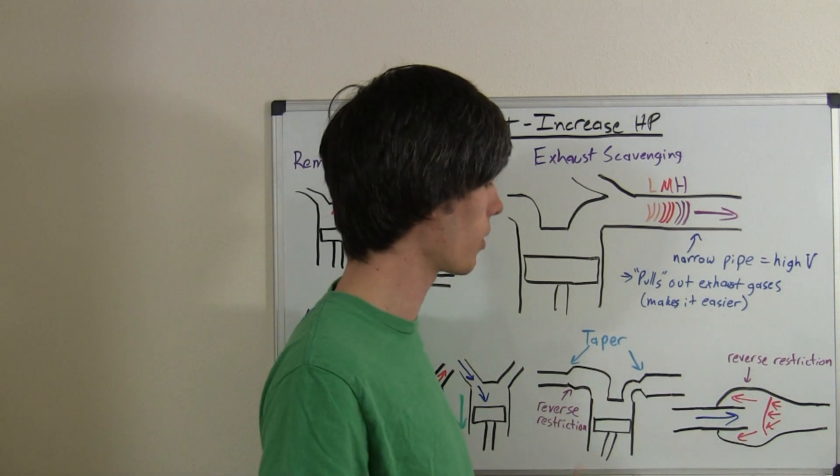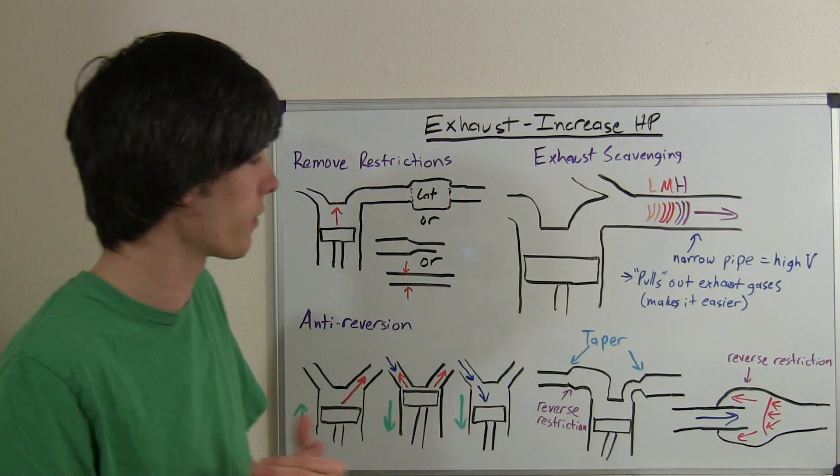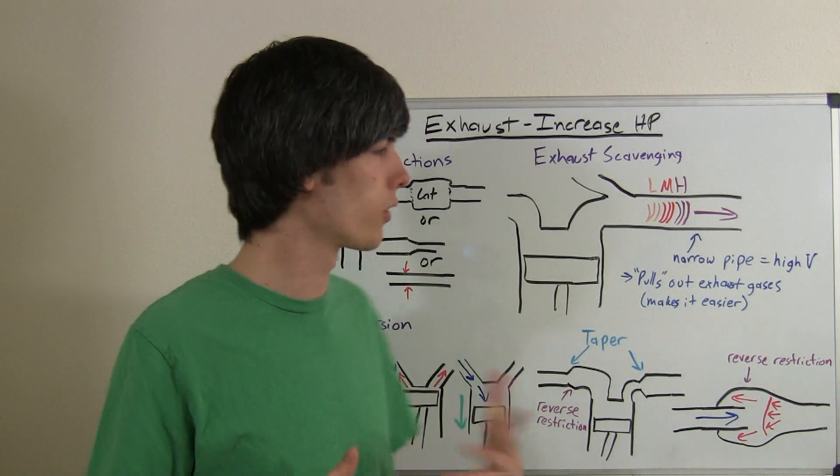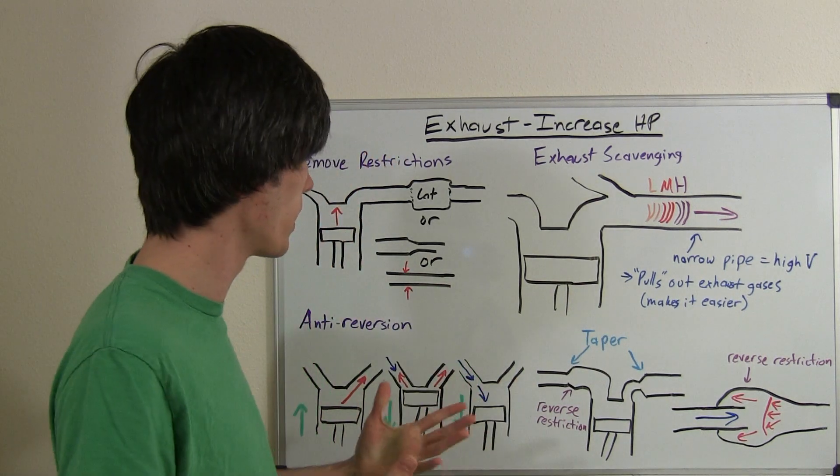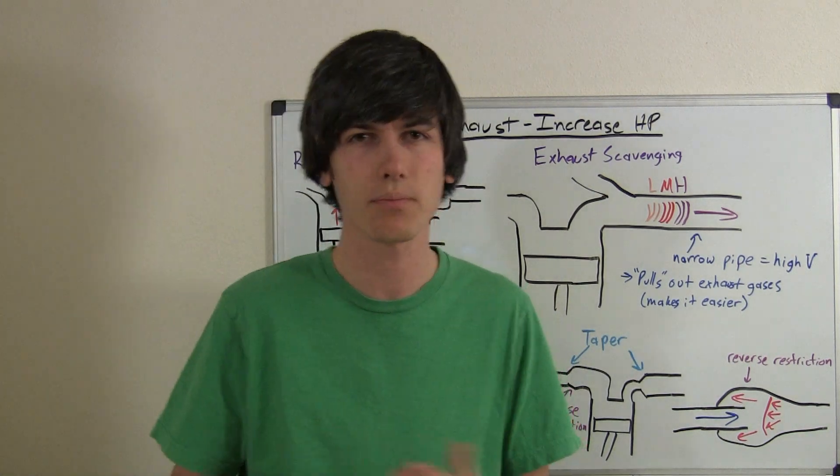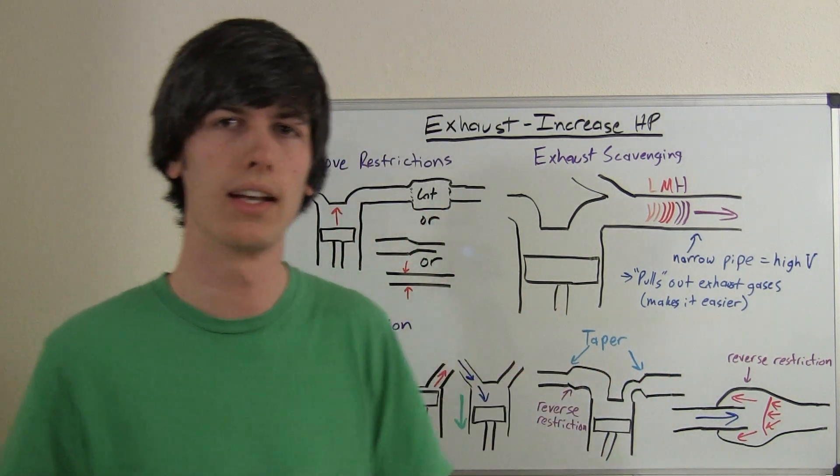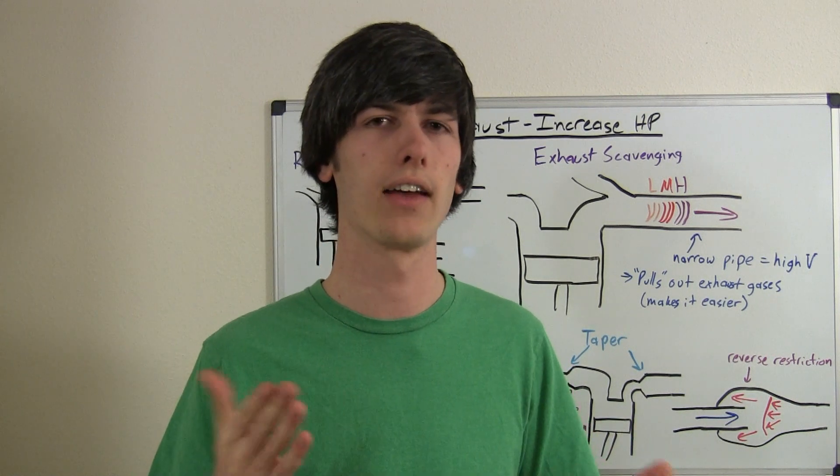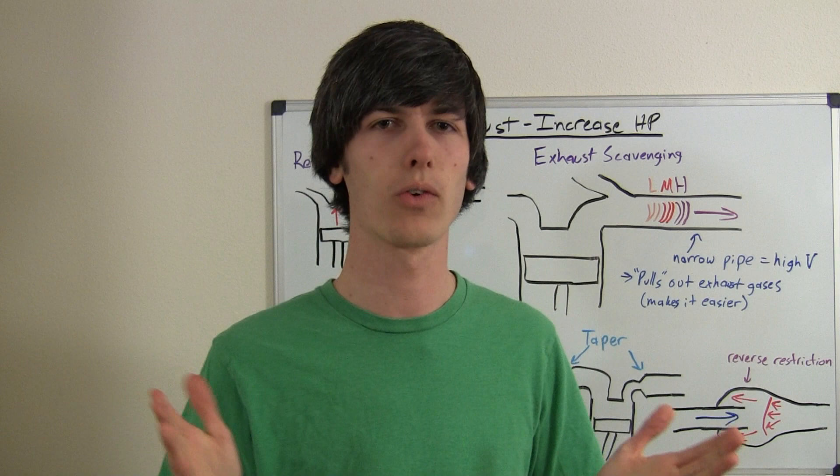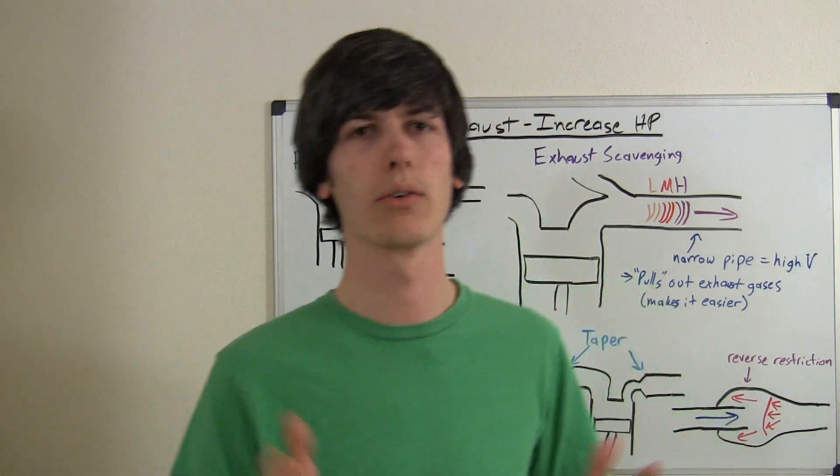So there's things like anti-reversion headers, and piping and stuff like that, that you can buy, so that that doesn't happen, and that can give you an increase in horsepower if you're having a reversion problem. So those are just several ways that a better exhaust system can improve horsepower, increase horsepower, and thus give you better acceleration. Thanks for watching. If you have any questions or comments, feel free to leave them below.